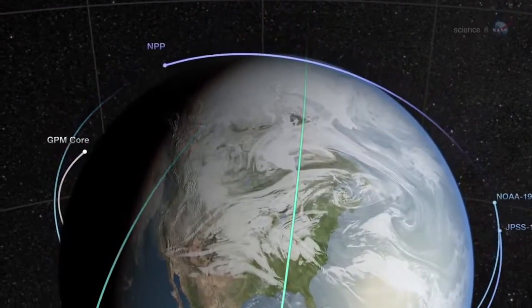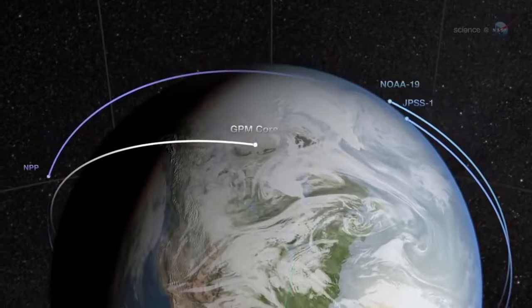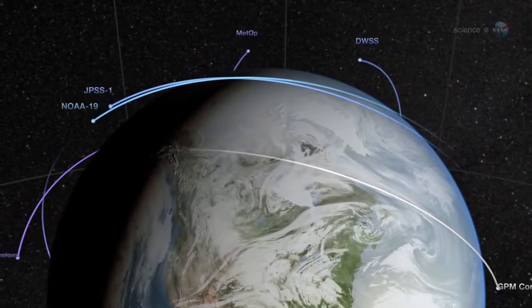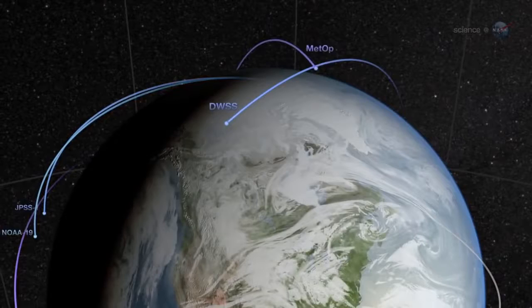Working with a network of other satellites, some already in orbit and some planned for the future, GPM can measure rain and snow every three hours anywhere on the globe.